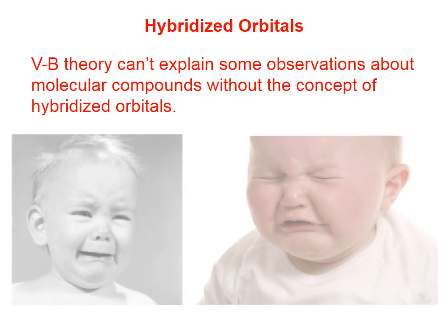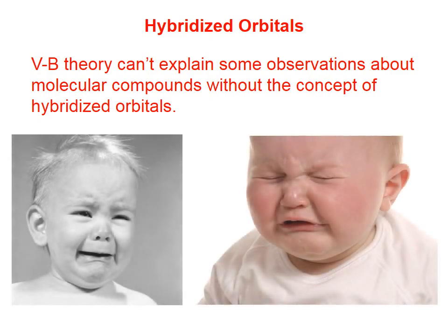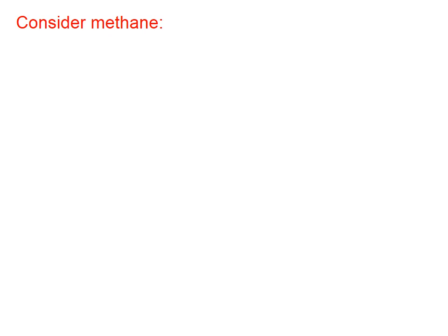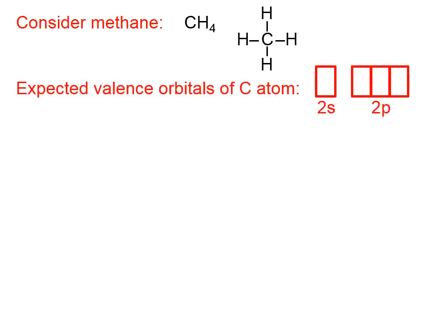Valence bond theory can't explain some observations about molecular compounds without the concept of hybridized orbitals. Let's consider methane, which has the formula CH4 and has that Lewis structure. If we look at carbon on the periodic table, carbon ends with 2S2, 2P2.